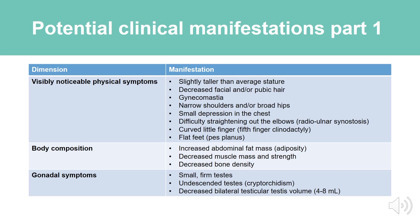Body composition symptoms include increased abdominal fat mass, adiposity, decreased muscle mass and strength, and decreased bone density. Gonadal symptoms include small firm testes, undescended testes or cryptorchidism, and decreased bilateral testicular volume — the average could be between 4 to 8 milliliters.